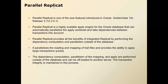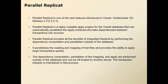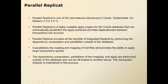Golden Gate performance is basically dependent on the type of extract and replicate you are using. With the introduction of integrated extract and integrated replicate, the performance of Golden Gate improved significantly. Now with parallel replicate, the performance has gone to the next level. Parallel replicate is a highly scalable apply engine for Oracle Database that can automatically parallelize the apply workload and take dependencies between transactions into account.